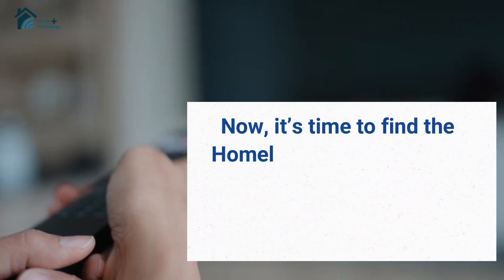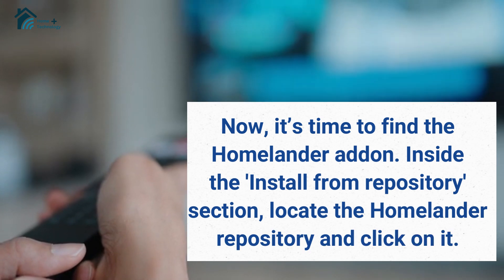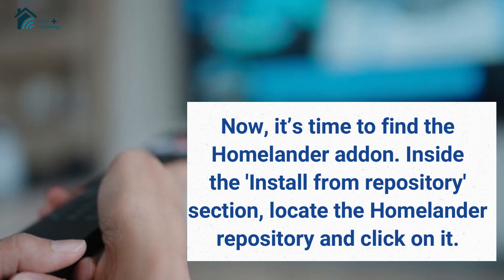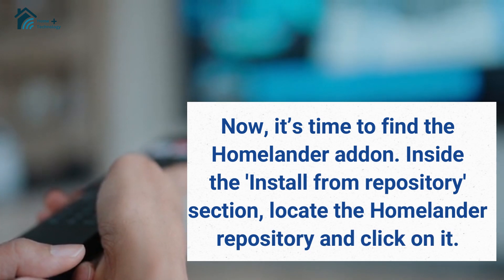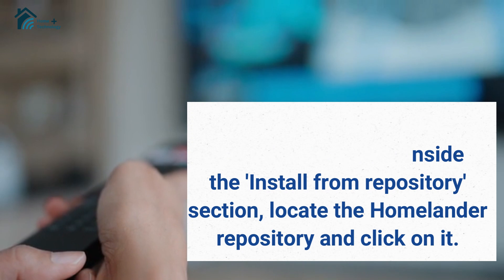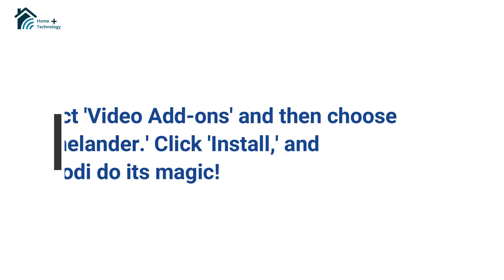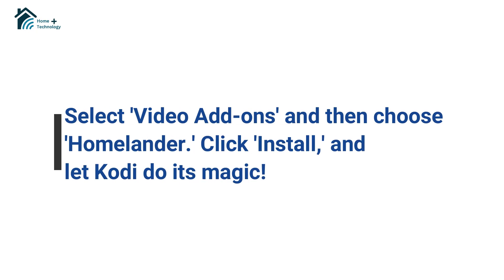Now, it's time to find the Homelander add-on. Inside the new Install from Repository section, locate the Homelander repository and click on it. Select Video Add-ons and then choose Homelander. Click Install and let Kodi do its magic.